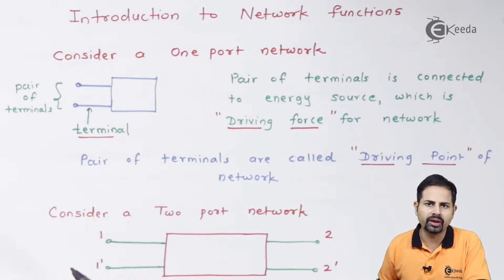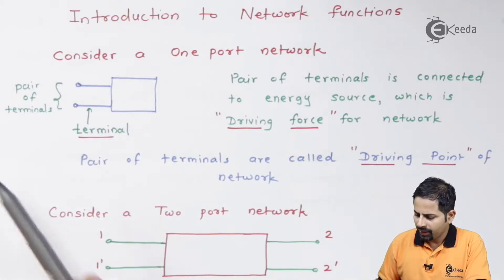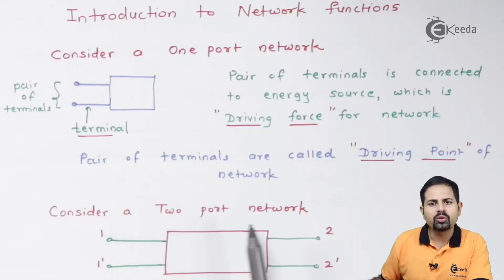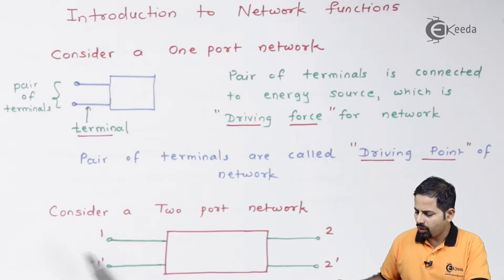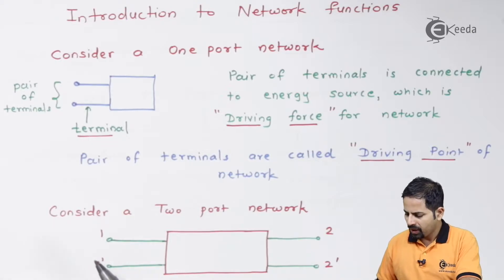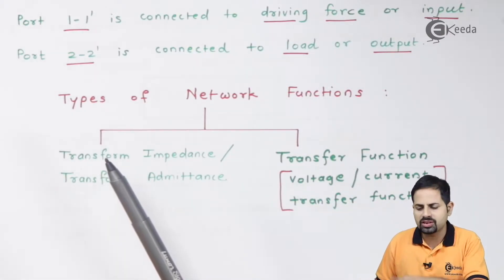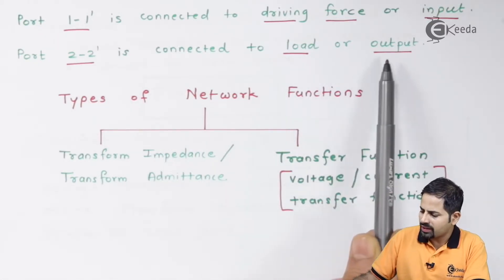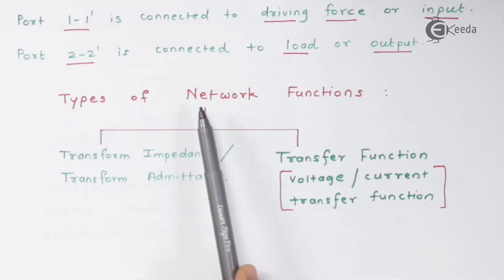A two-port network has four terminals — two pairs. One pair can be called the input pair and the other the output pair. Port one–one-dash is connected to a driving force which drives the circuit, and port two–two-dash is connected to some load or output. In general, we call this driving force the input.